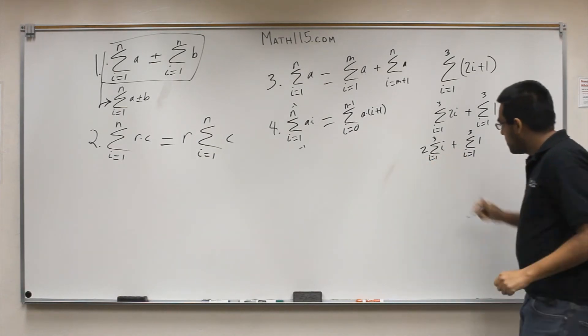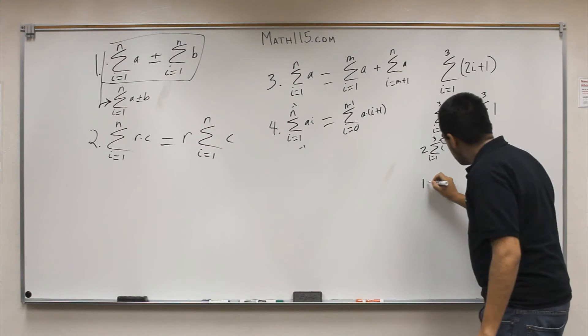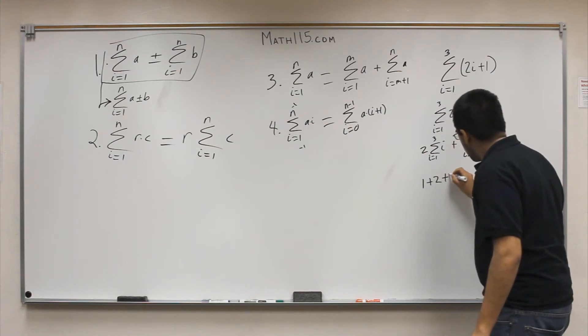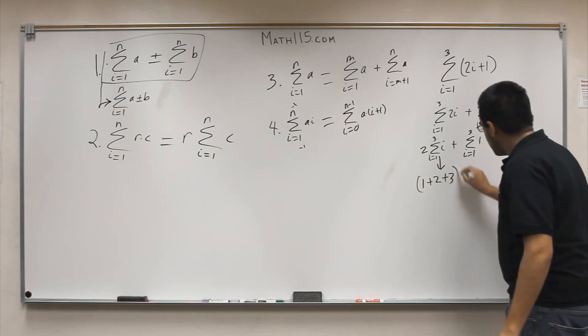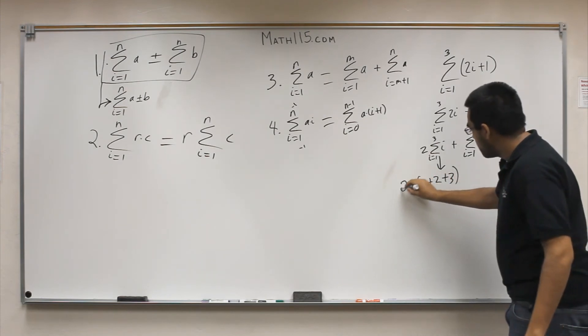How does that work? Summation of 1 plus 2 plus 3. That's what this part right here means. The sum of these three answers together, you multiply by 2.